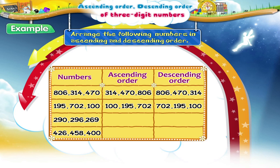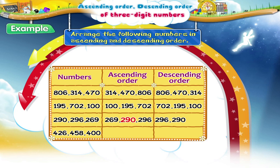For the third set of numbers, the ascending order is 269, 290, and 296. And the descending order is 296, 290, and 269.